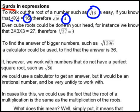A number that can be multiplied with itself to give you the number under the square root sign. Now even cube roots could be done in your head. For instance we know that 3 times 3 times 3 is equal to 27. So the cube root of 27 would be equal to 3.